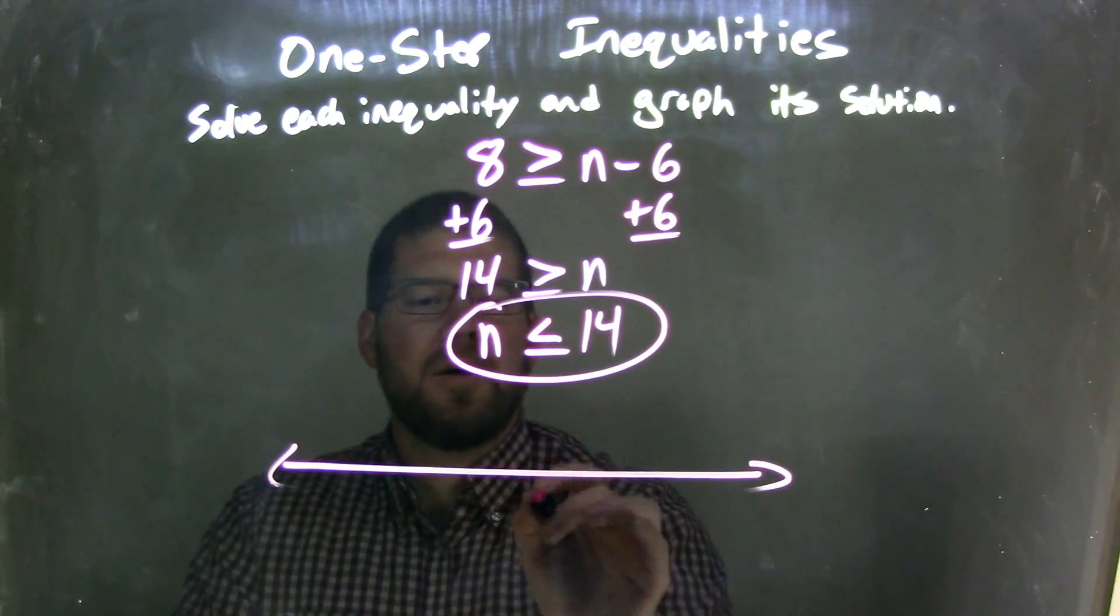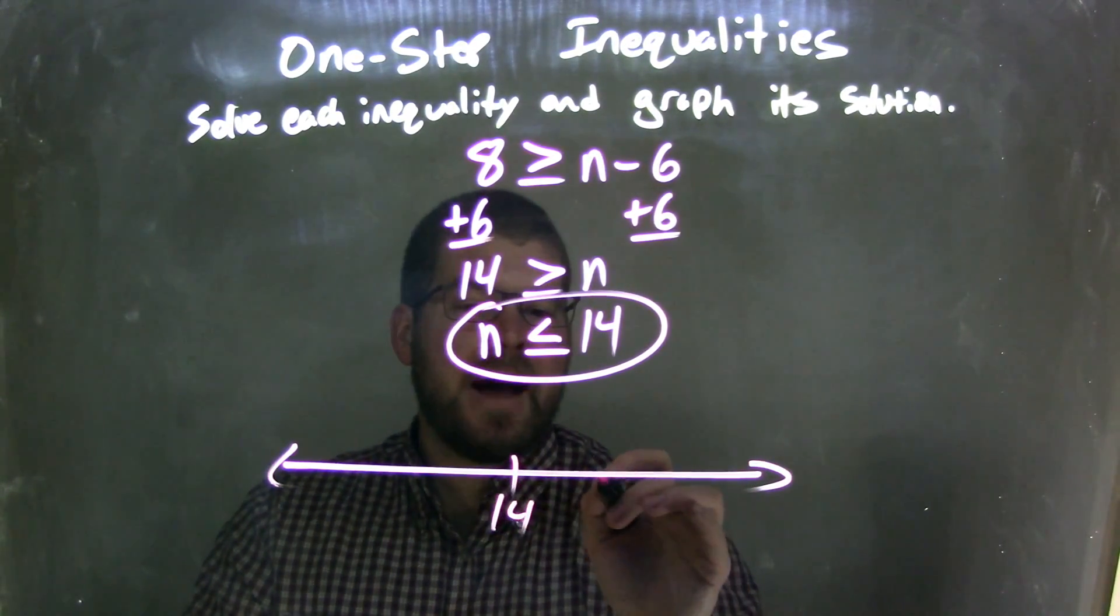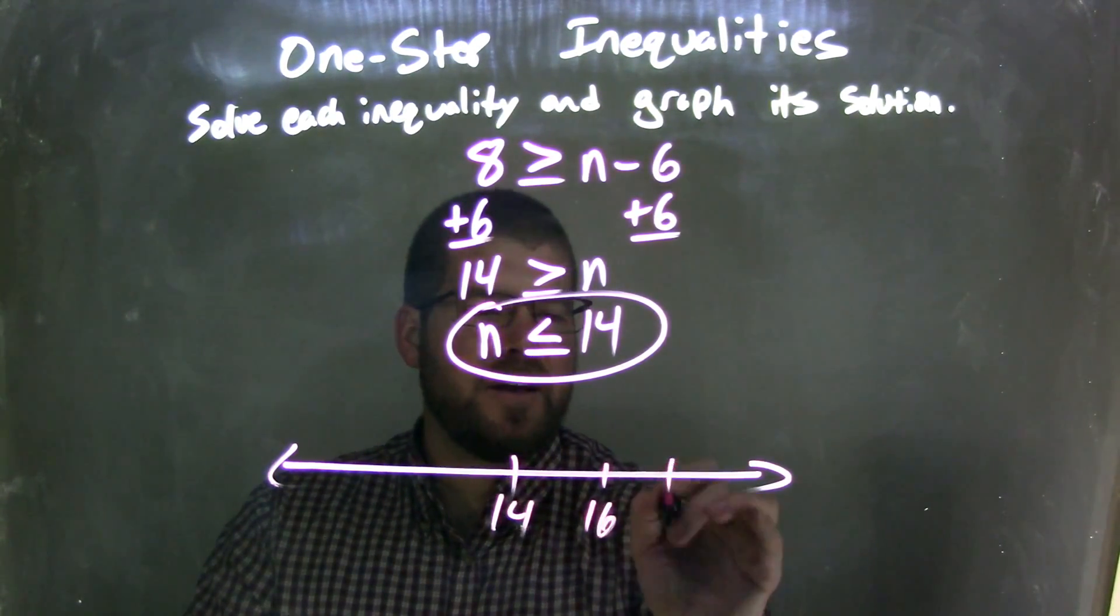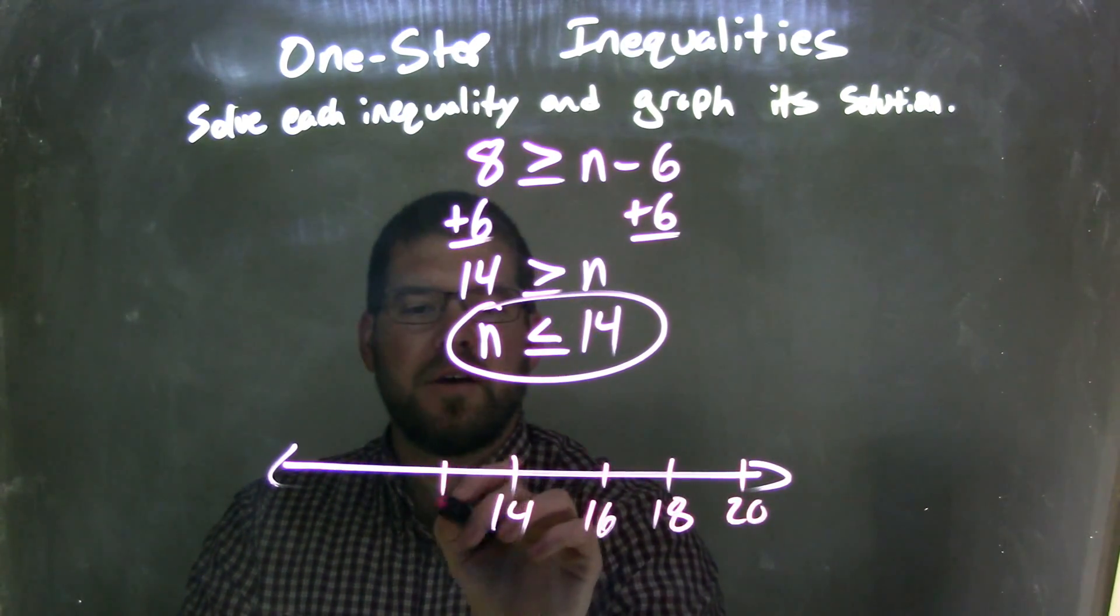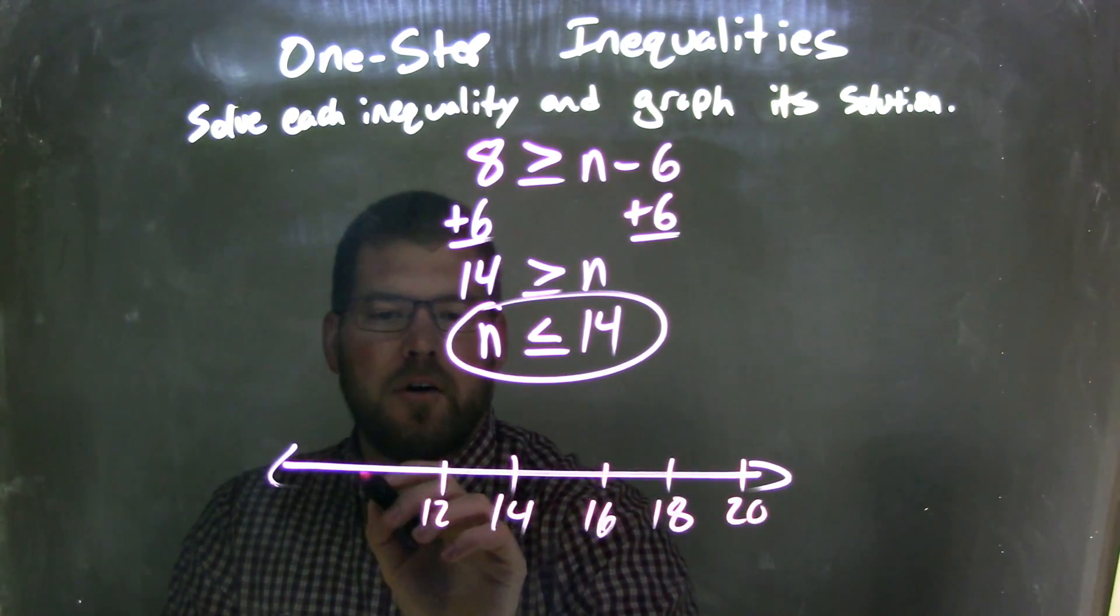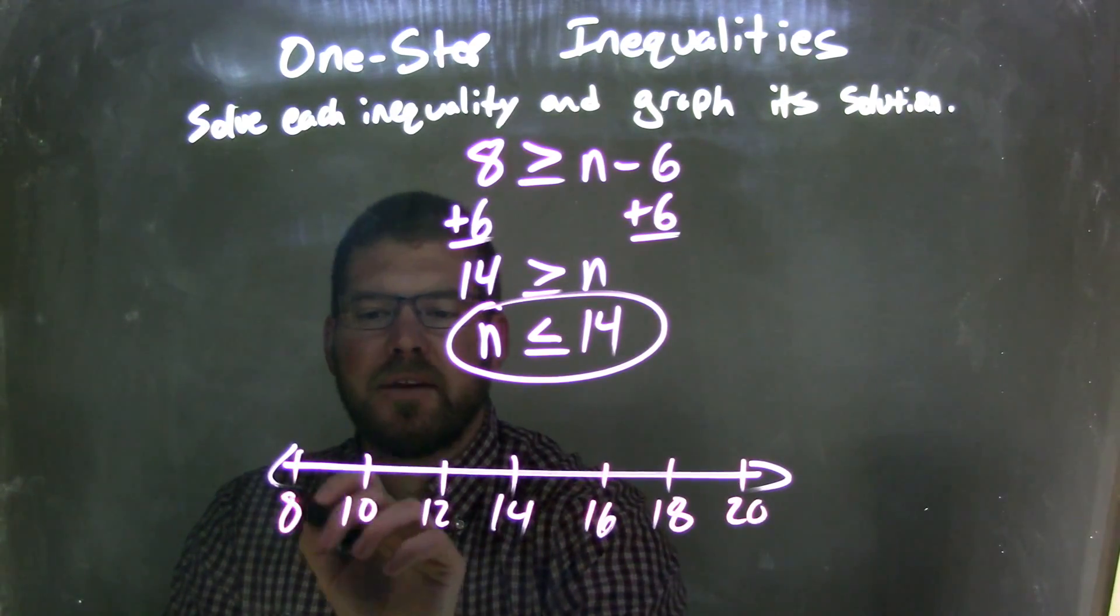Let's grab our number line here. Let's go 14 right there. And let's go 16, 18, 20, 12, 10 and 8, by 2s.